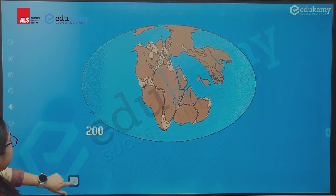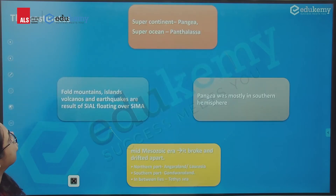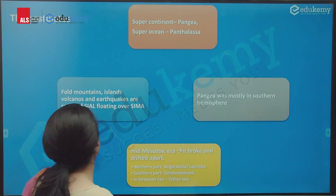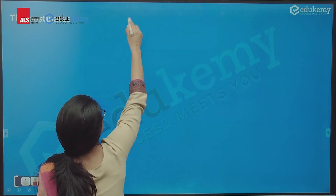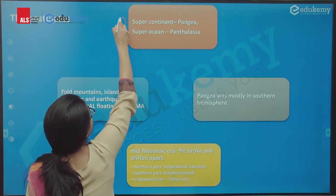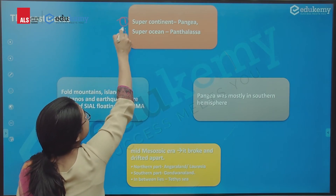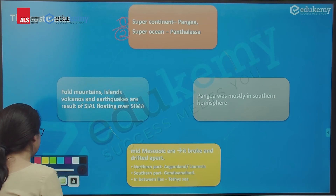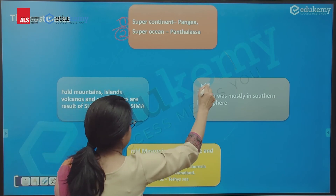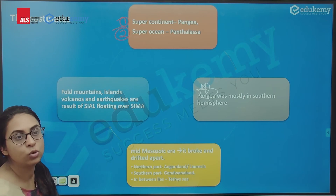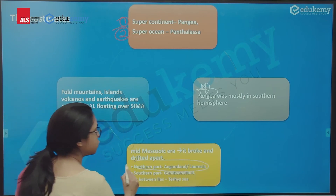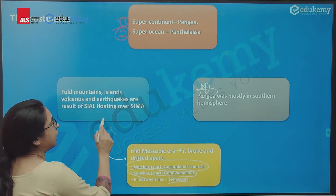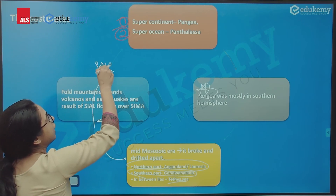So Wegener's theory was like this: initially there was one super continent called Pangaea and one super ocean called Panthalassa. Pangaea was mostly in the southern hemisphere. Then in the mid-Mesozoic time it broke into two parts — the northern part called Laurasia and the southern part called Gondwana — with the Tethys Sea in between, leading to the present-day continents.